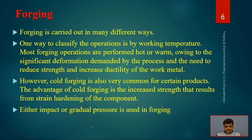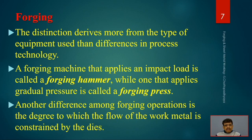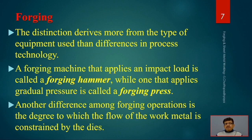The force can be either gradual or impact. The distinction comes from the equipment used. A forging machine that applies an impact load is called a forging hammer, while one that applies gradual pressure is called a forging press. Companies like Indian Fine Blanks specialize in producing press tools and forging presses used by automobile companies such as Telco to manufacture different components.